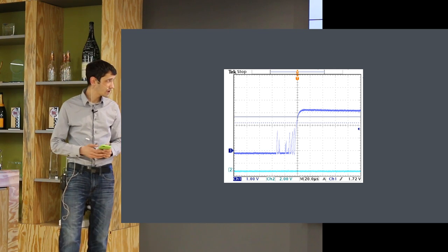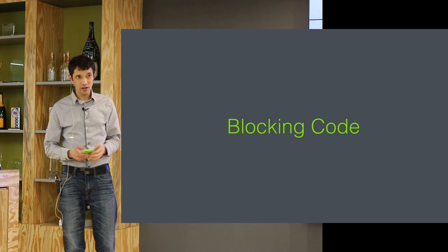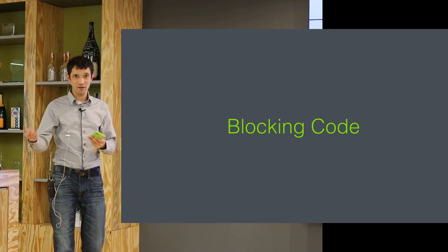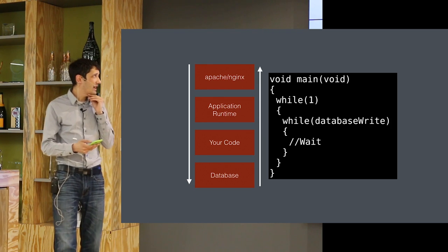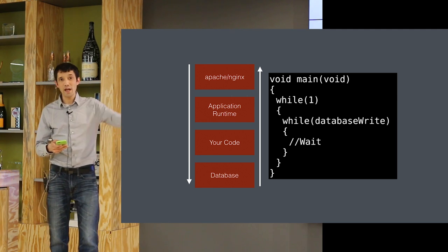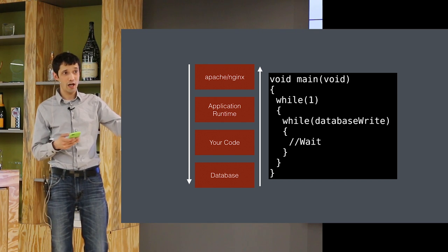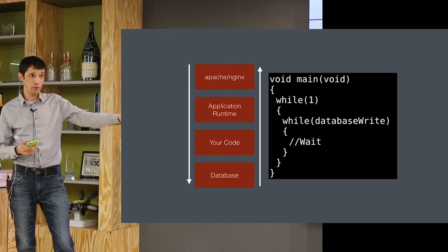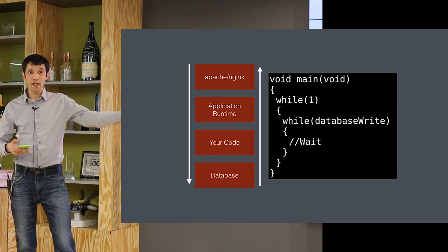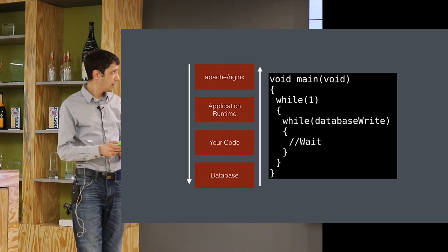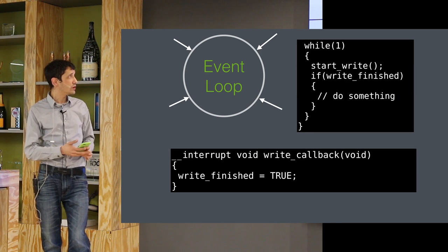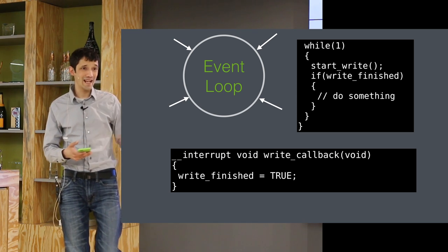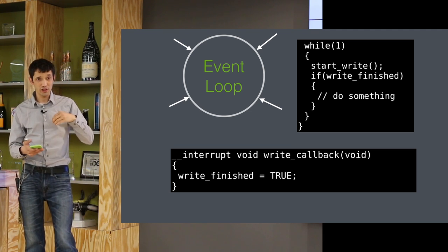The next big thing I learned is dealing with blocking code. On the web, things happen atomically and pretty fast — you can write to a database and wait for that write to happen and trust it'll complete in time. Unfortunately that's not always the case in an embedded system. If you send a write to a peripheral, you may have to do other things while waiting on that peripheral to acknowledge the write. You start the write and keep going through the loop, waiting for a flag or callback to tell you the write has finished.